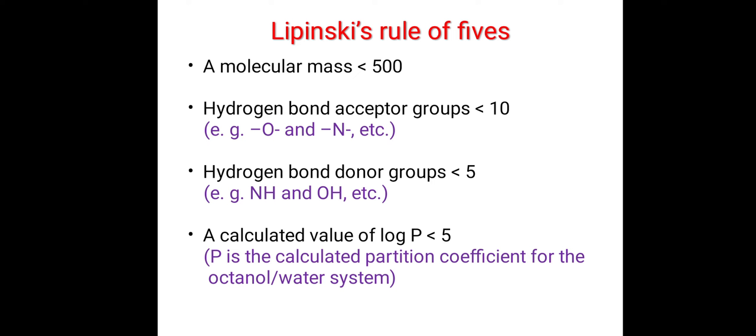The third rule, hydrogen bond donor groups should be less than 5, for example, NH and OH group, etc.